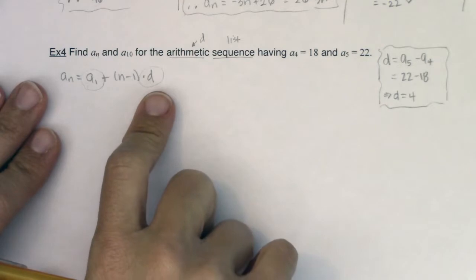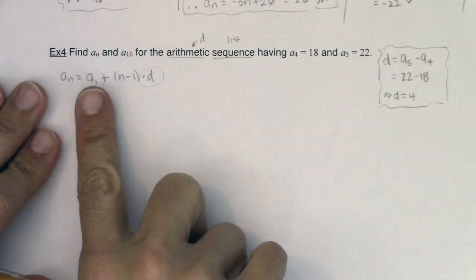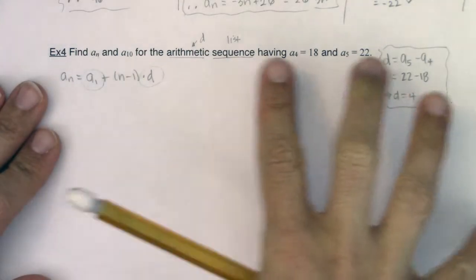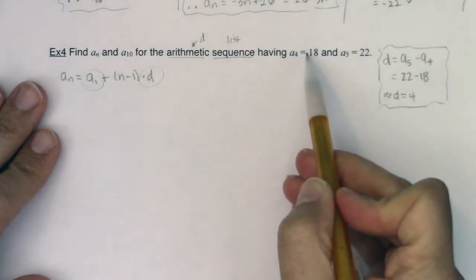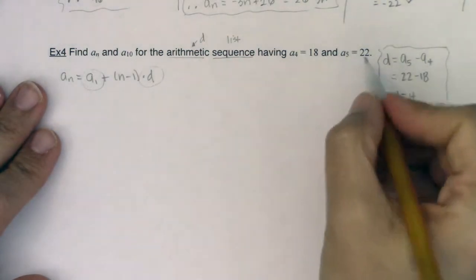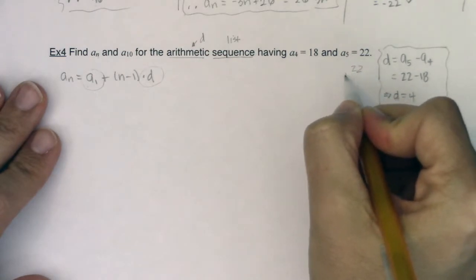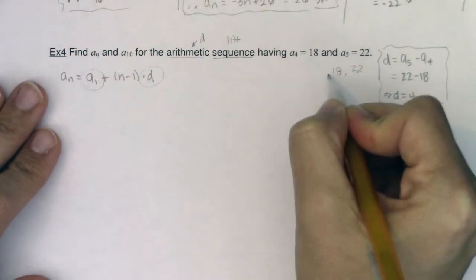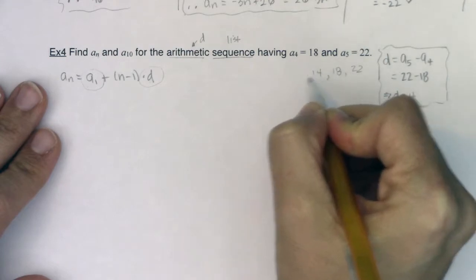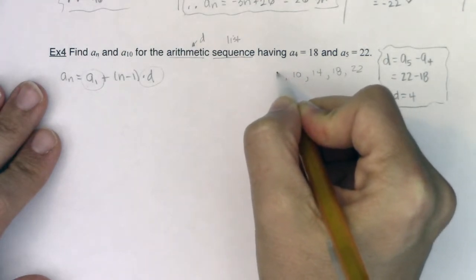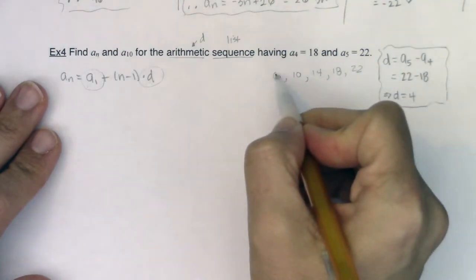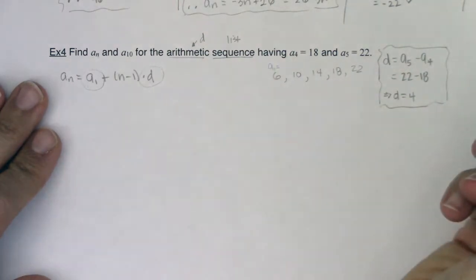Now there are a couple of ways to attack this. We could actually just count backwards. If we know we have 22, we can say, well, then a_4 was 18. If I go back one more, this would have been 14, then I would have had 10, and then I would have had 6. So we can count backwards and we can see that a_1 is equal to 6.